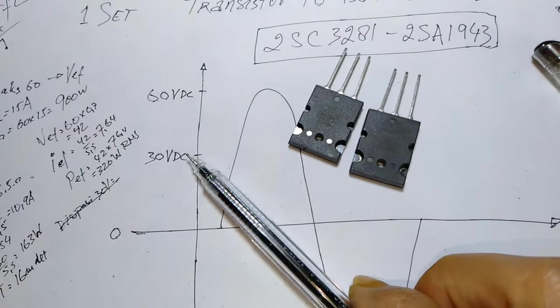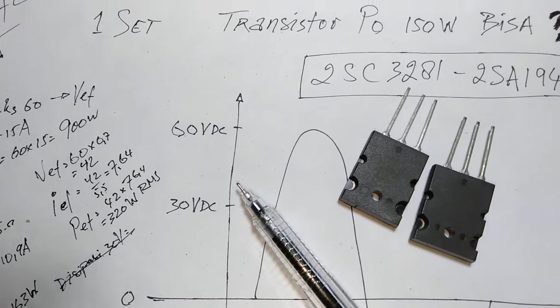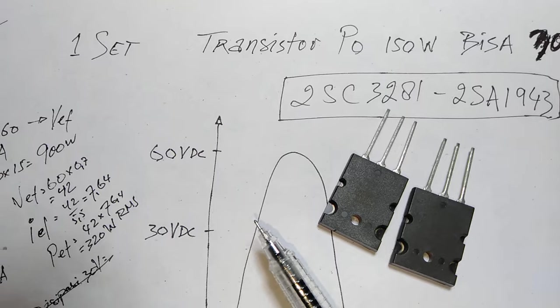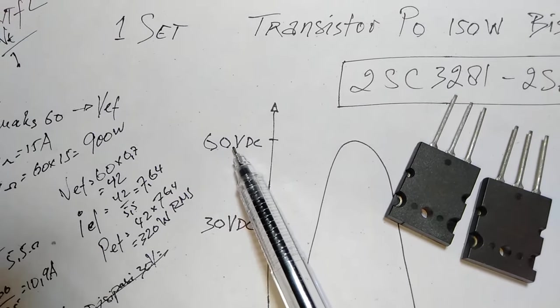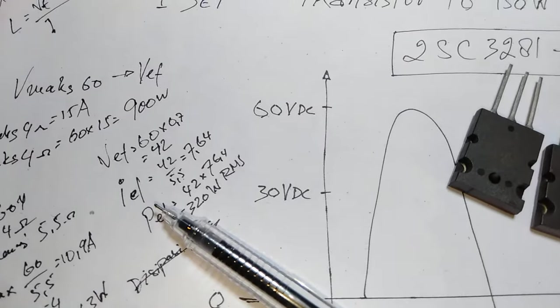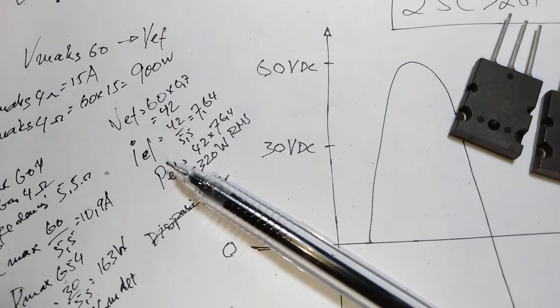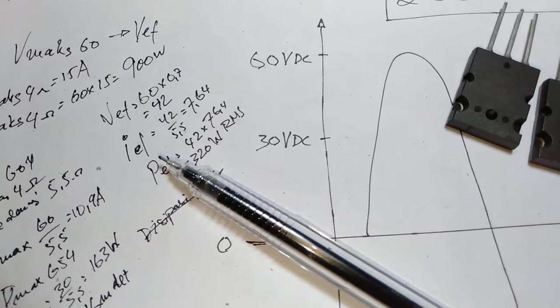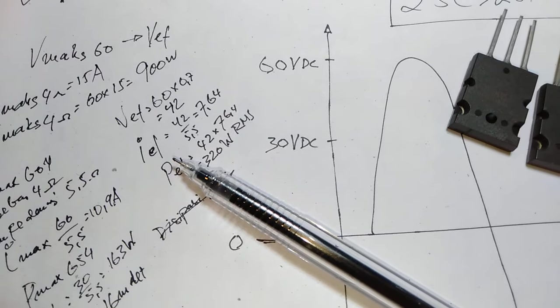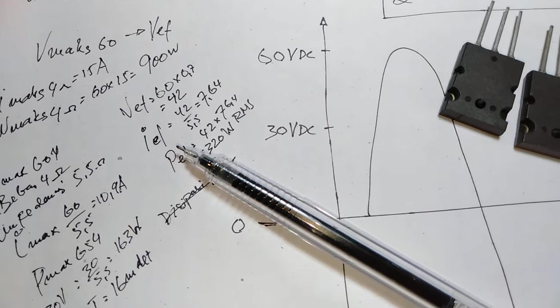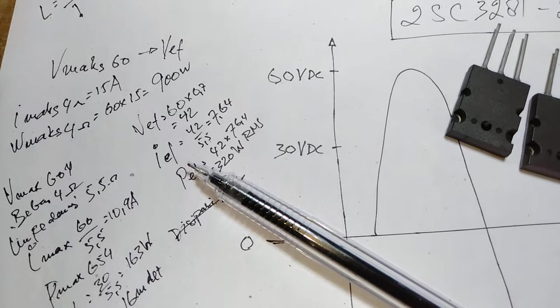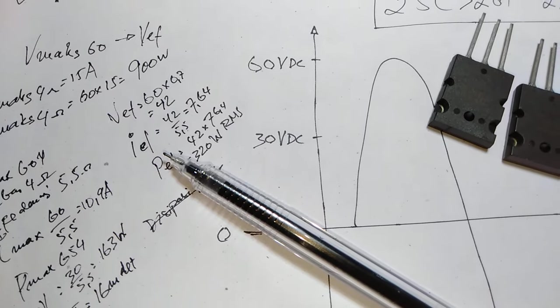Sekarang begini ya, dia bisa hasilkan 300 Watt bahkan lebih guys, pada 4 Ohm dengan CT 60V DC. Nah 4 Ohm beban speaker, itu yang 4 Ohm itu guys saya kasih tau ya, itu resistansi DC namanya. Diukurnya pakai tester itu DC, secara DC ya guys. Di dalamnya kan ada coil, yang diukur itu kan coilnya guys.